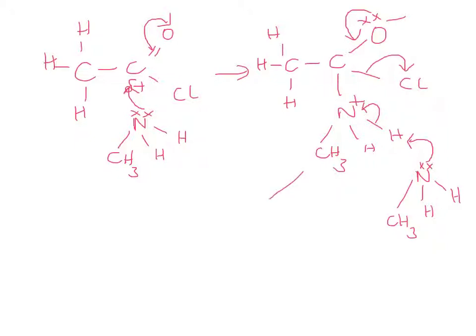We can now redraw our products. We've got CH3, C double bond O because the electrons from the O minus have gone back in to form a double bond. The nitrogen has lost one of the hydrogens, so it's now left with CH3NH, and the methyl ammonium ion has formed and Cl minus has formed.